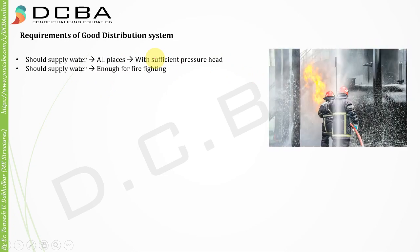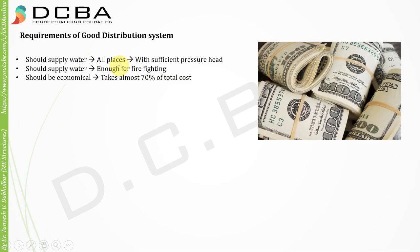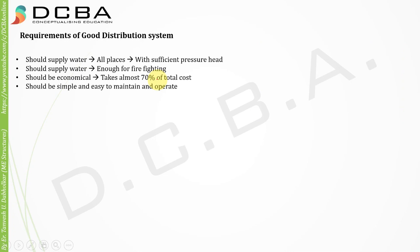The second requirement is that the supply from the distribution system should be enough for firefighting. It should also be economical. The distribution system is one of the most financially demanding systems in the entire water supply process, taking almost 70 percent of the total cost. It should be simple and easy to maintain and operate.